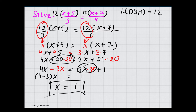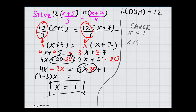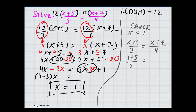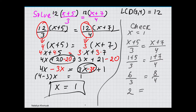To check, we plug in x equals 1 into (x+5)/3 equals (x+7)/4. Substituting 1, we have (1+5)/3 equals (1+7)/4. So we have 6/3 should equal 8/4. 6 divided by 3 is 2, and 8 divided by 4 is 2. So that's a true statement.